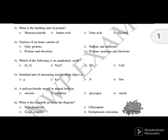Which of the following is an amphoteric oxide? Given for choice: first is Al2O3, second is Na2O, third is SO2, fourth is CaO.